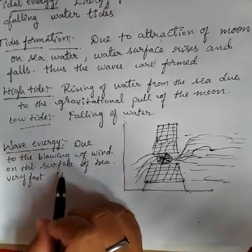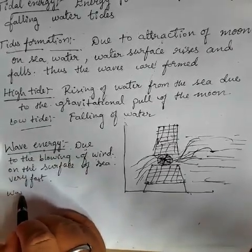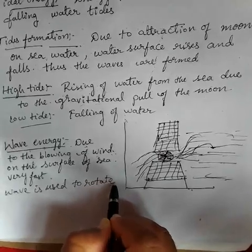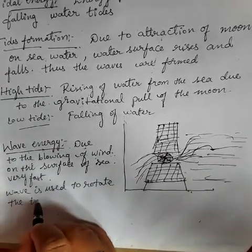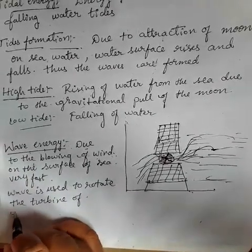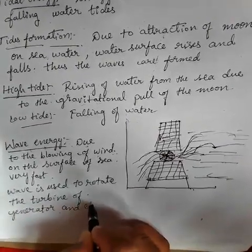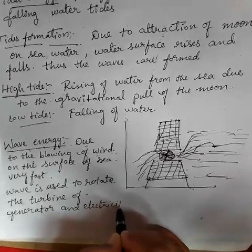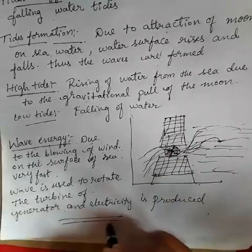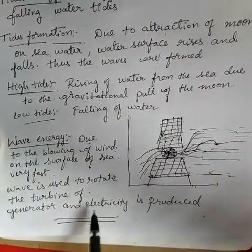So waves are used to rotate the turbine of a generator, and electricity is produced. This is how wave energy helps in the formation of electricity.